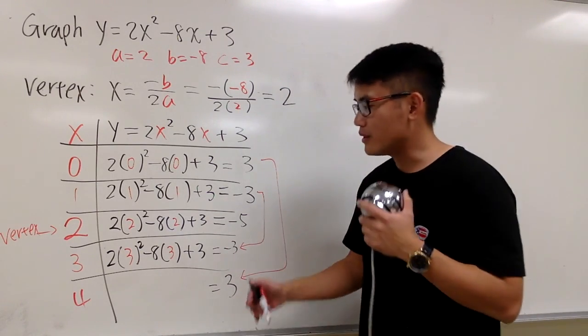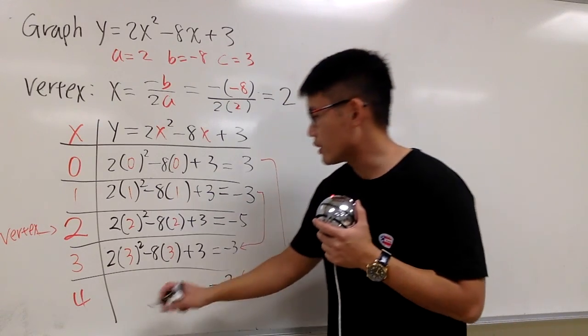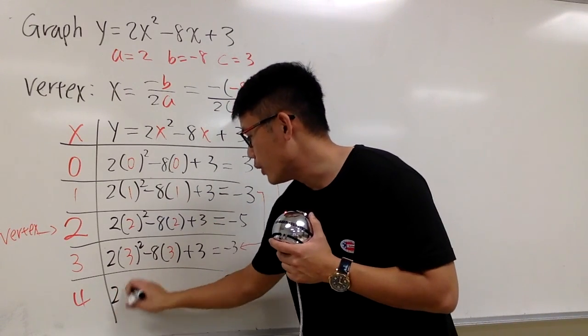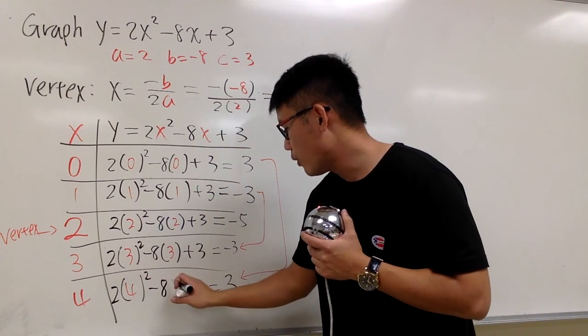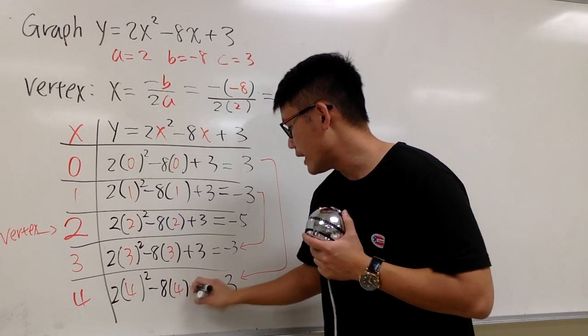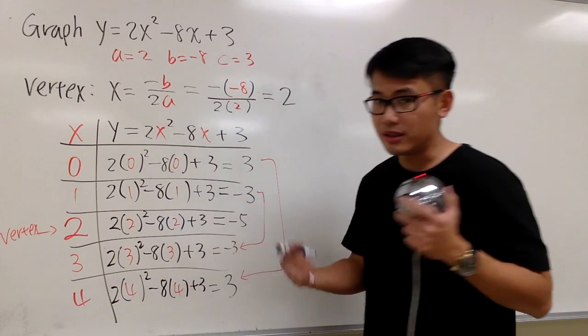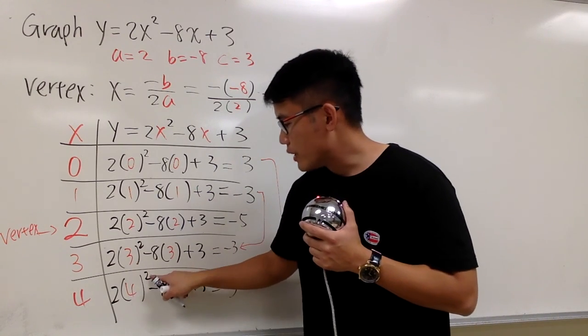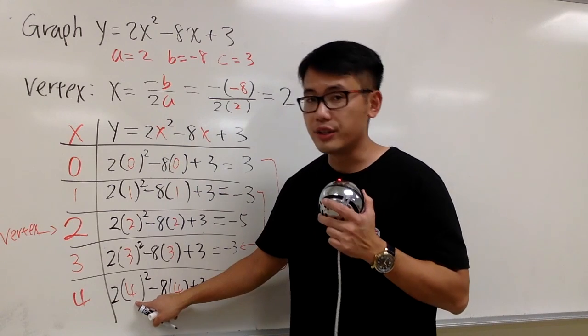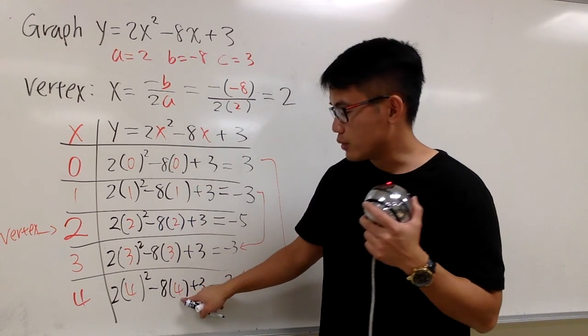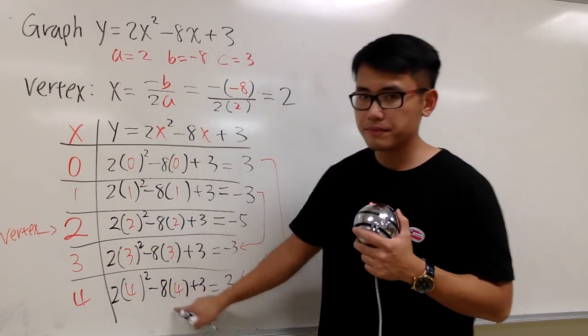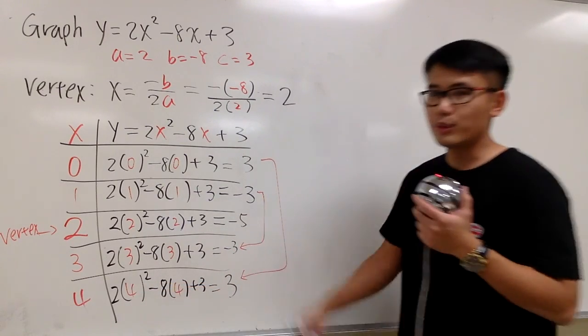And for the last one, once again, if you would like, can just work it out. But it's going to be the same. But I will still show you. 2 times 4 squared minus 8 times 4, and we add 3 to that. It will be 3. And let's check this out. 4 squared is 16 times 2 is 32. And then, this is 8 times 4, which is also 32. 32 minus 32 is 0. You add 3 to that. You still end up with 3. Perfect.